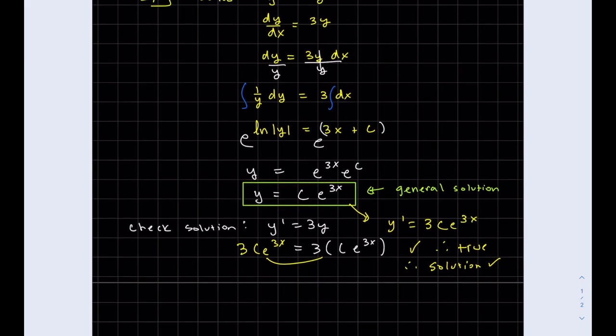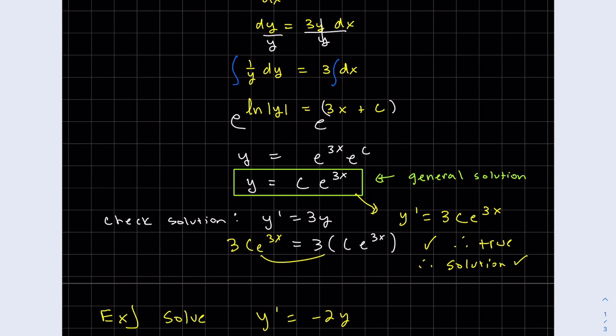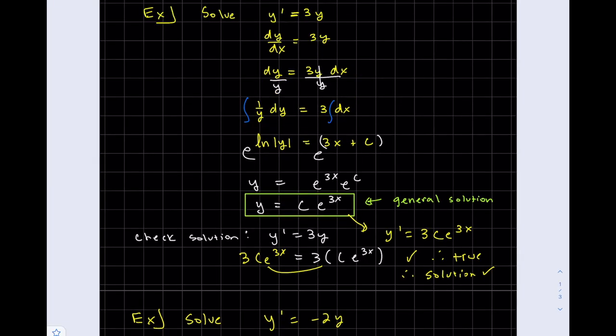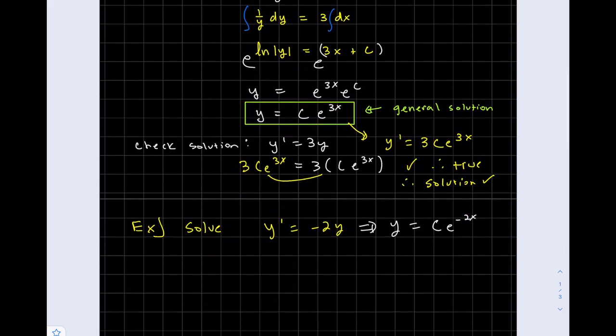So what if we do another one? Same problem, same form. But remember, this is the same form as up here. Here, this 3 turned out to be the power of 3x. So my solution is y equals c e to the minus 2x, because that is my power, my exponent. So that's my solution. Similar to above.